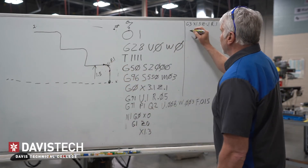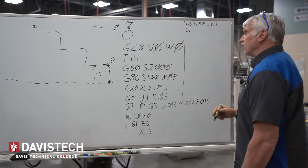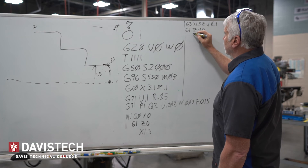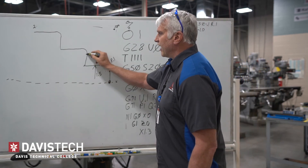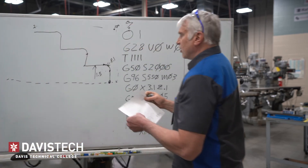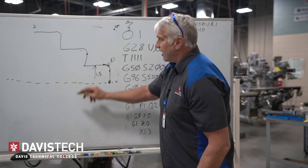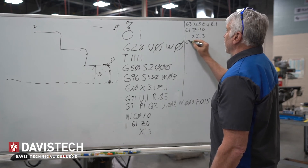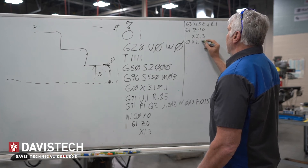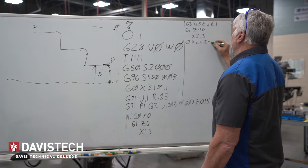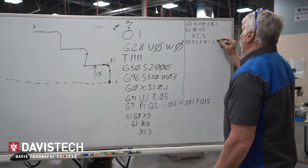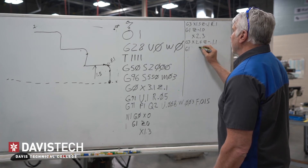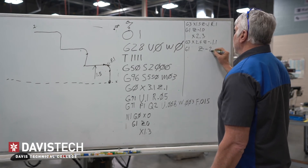Now I have another straight line move — that's a G01, meaning a linear move — and I'm going to go to Z of negative 1.0. Then I'm going to go to X — looking at my blueprint, that's 2.5 minus 200 thousandths, which is a hundred on this side and a hundred on the backside, so 2.5 to 2.3. I'm going to go to X 2.3. Then I'm going to go to G03 again, go to X of 2.5 and Z of negative 1.1. Then I'm going to do another G01 and go to Z of negative 2.0.